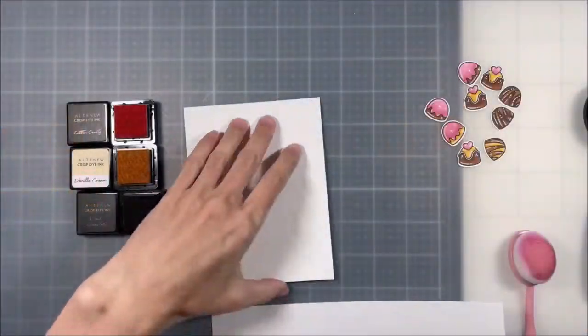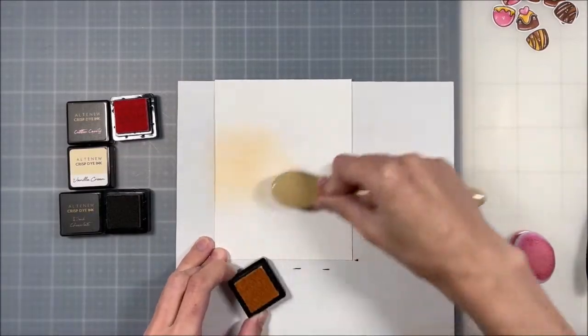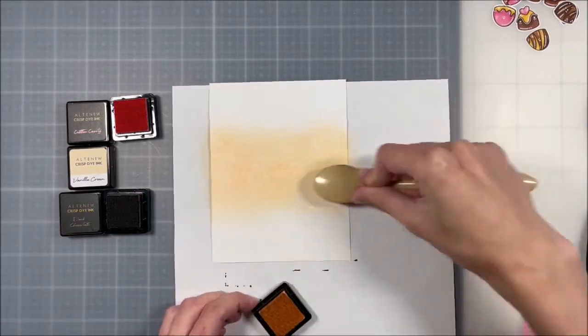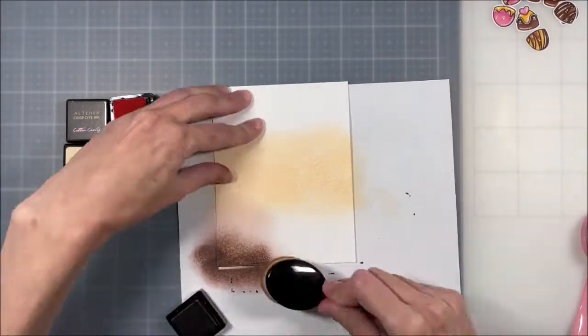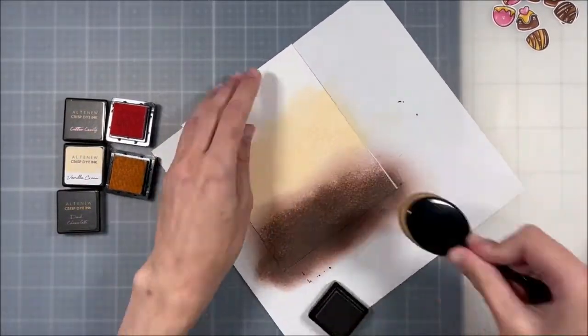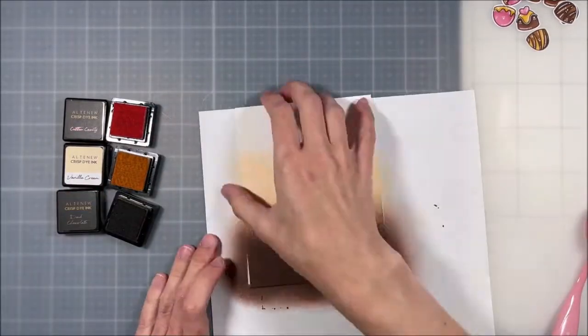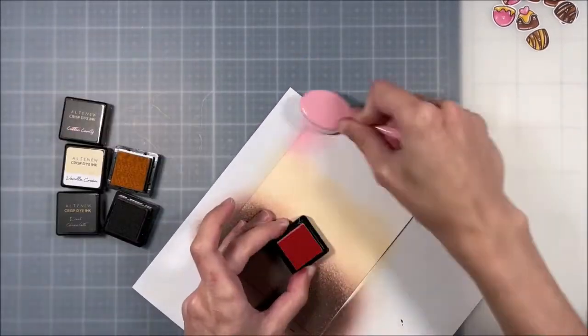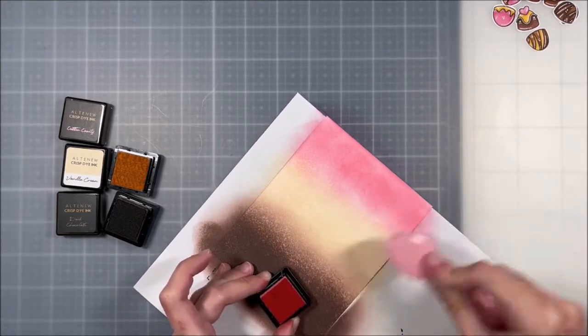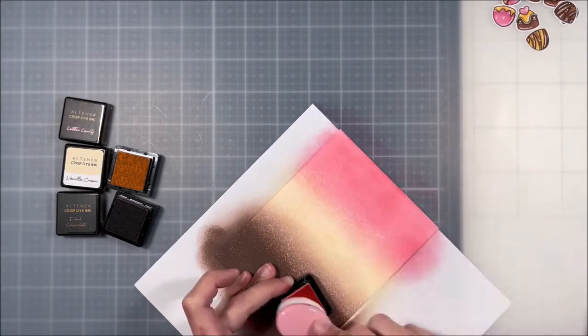For my card base, I decided to ink blend it in a Neapolitan ice cream sort of fashion. It was inspired by the colors that I chose for the candies, which I didn't even realize until I was doing it. So I used a vanilla sort of color, a cotton candy color for the strawberry, and then a dark chocolate color. As you can see, the dark chocolate took a bit of work to blend, but the more I went over it the smoother it went. And if you make any sort of ink blending mistakes or you get color where it shouldn't be, I use my Tombow Mono Sand eraser to just pick that up and you can't see it at all in the final card.